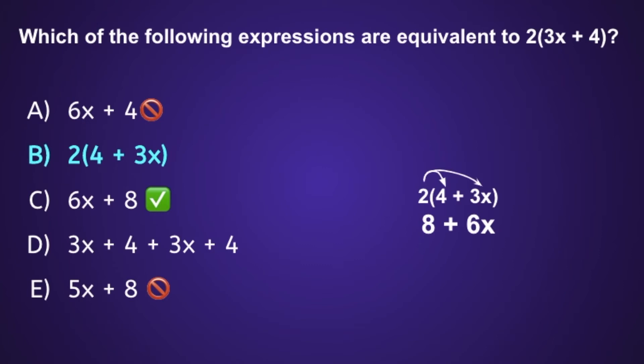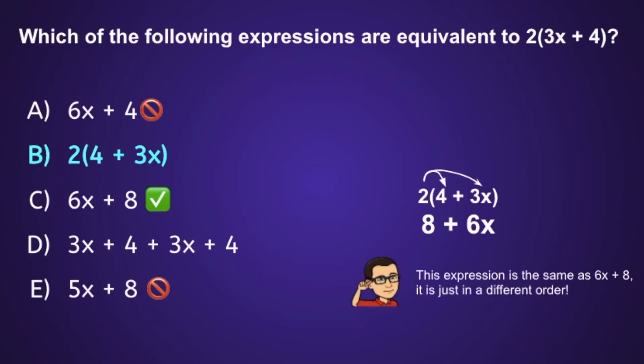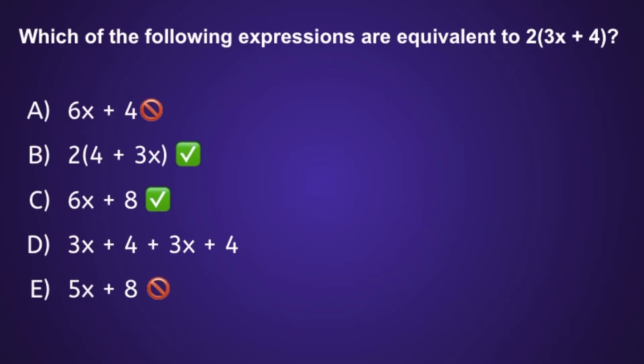This looks different than 6x plus 8, but are those equivalent? Yes — 8 plus 6x is exactly the same as 6x plus 8, it's just in a different order. Remember, when we add numbers, the order does not matter; we will always get the same sum. That lets us know that B is correct.